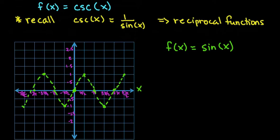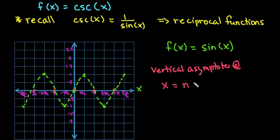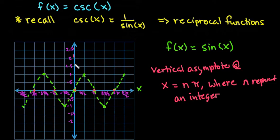So one thing that I want to talk about here is that because of the fact that sine equals 0 at these points right here, we do end up with vertical asymptotes at x = nπ, where n just represents any integer. So for example, if n were 0, 0 times π is 0, that means that we have a vertical asymptote at 0.